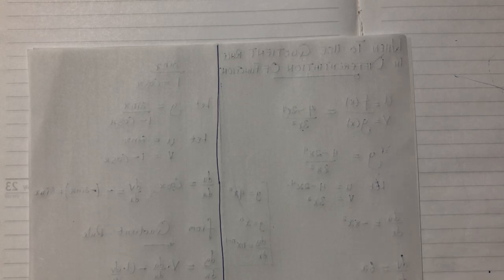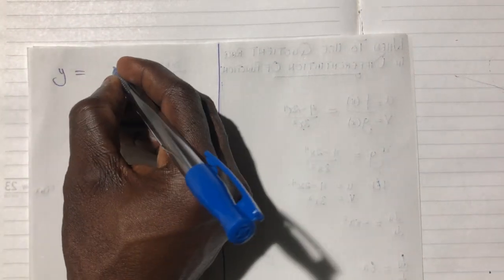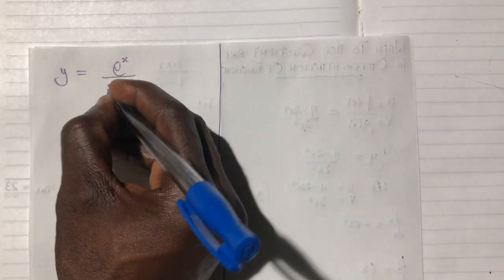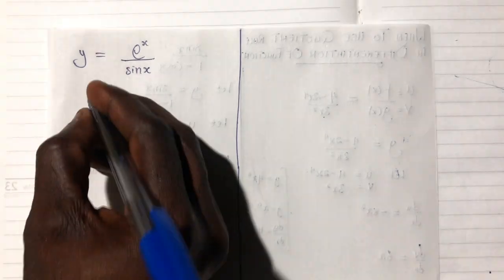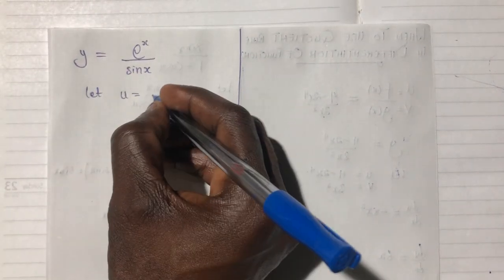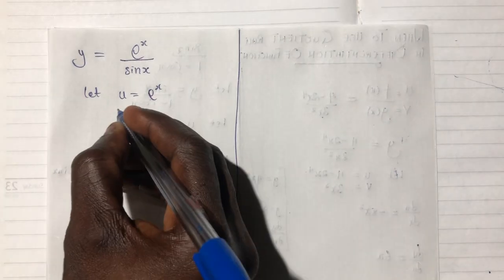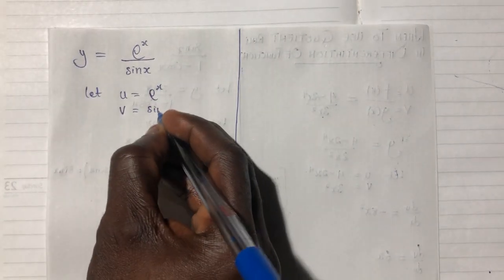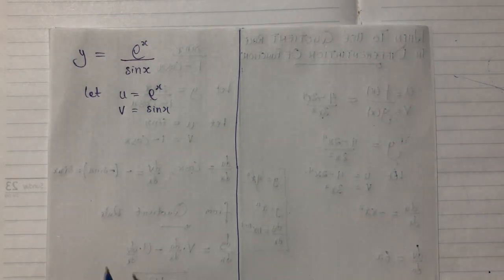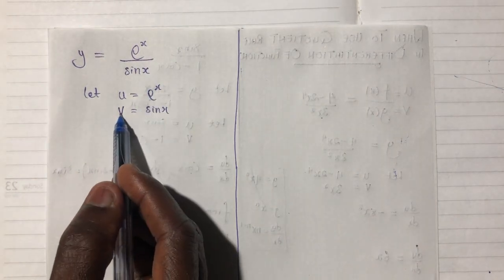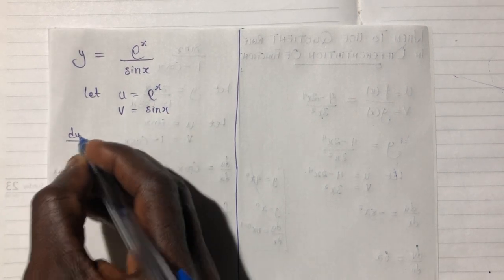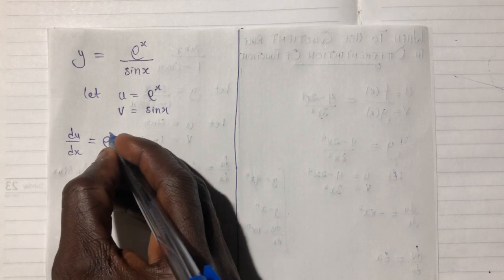The final example will involve an exponential function. What if I have y equal to e to the power x all over sin(x)? For this one I will say let u be equal to e to the power x, and let v be equal to sin(x).